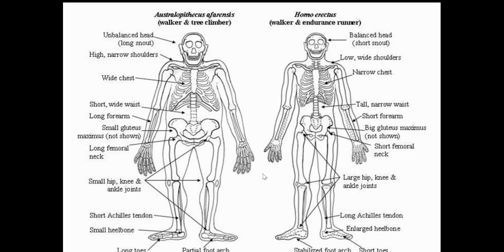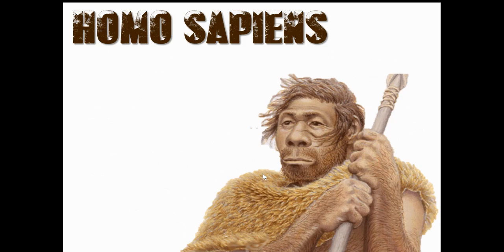Our bodies changed a lot too as we evolved. On the left you have high narrow shoulders — a walker and tree climber, the Australopithecus. On the right you have Homo erectus, the walker and endurance runner. The body on the right was built for traveling much more. The one on the left had small hips — it wasn't going anywhere anytime soon. It all depended on where they lived, and their body would change over millions of years.